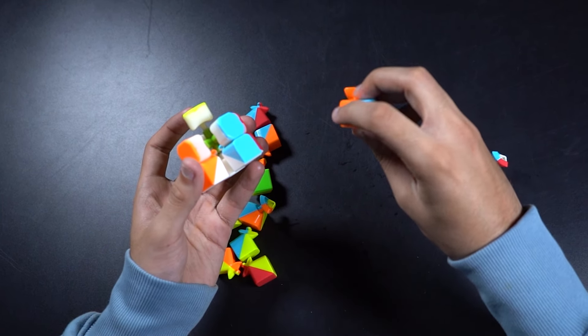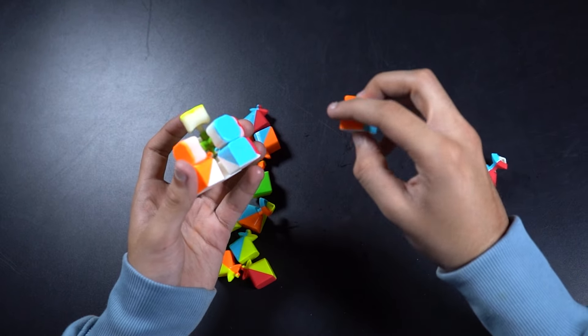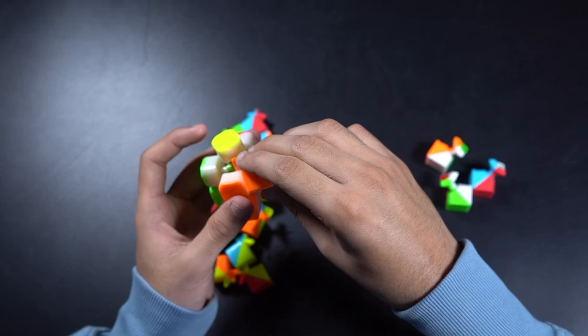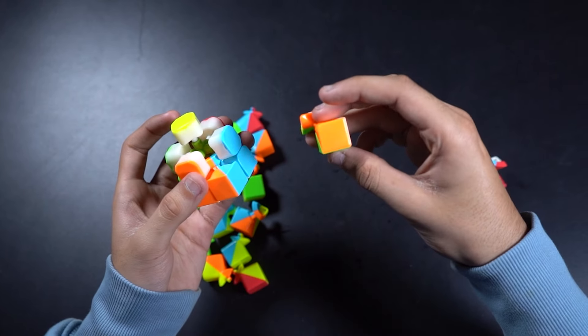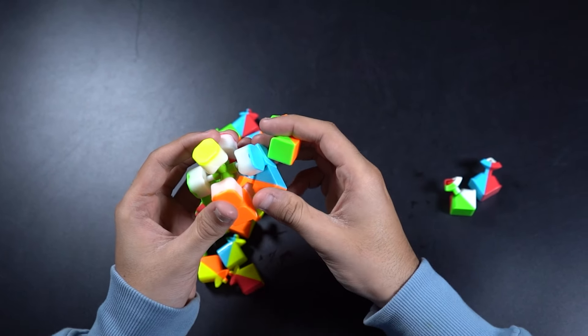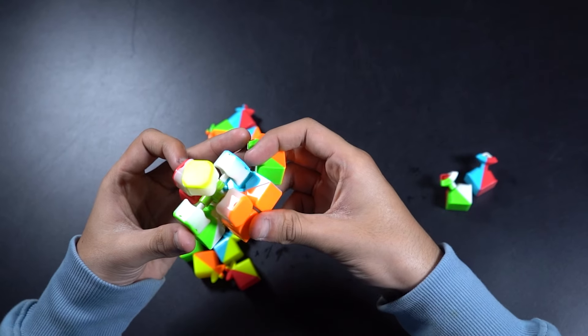So this is the orange and blue corner. So we put it between the orange and blue centers like so. And this is the orange and green one. So we just put it between the orange and green centers.